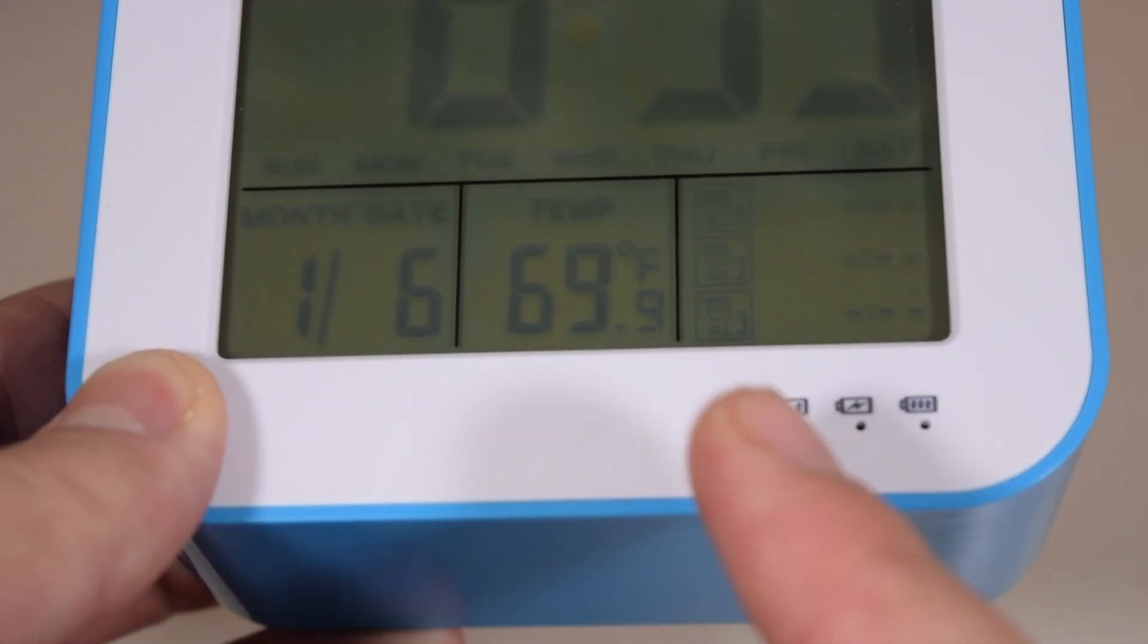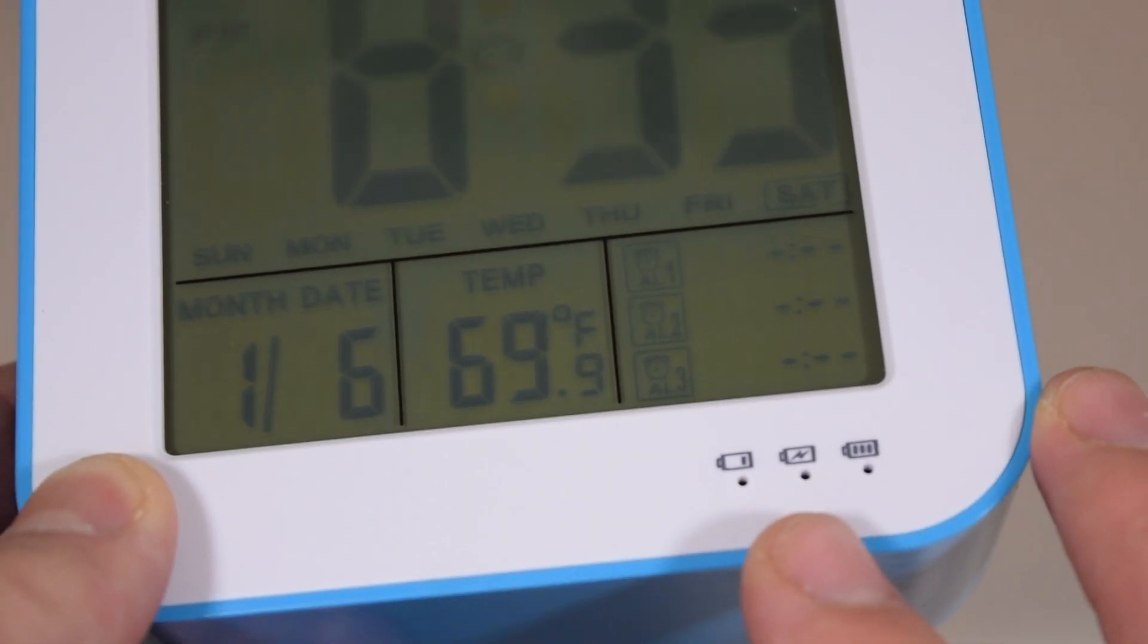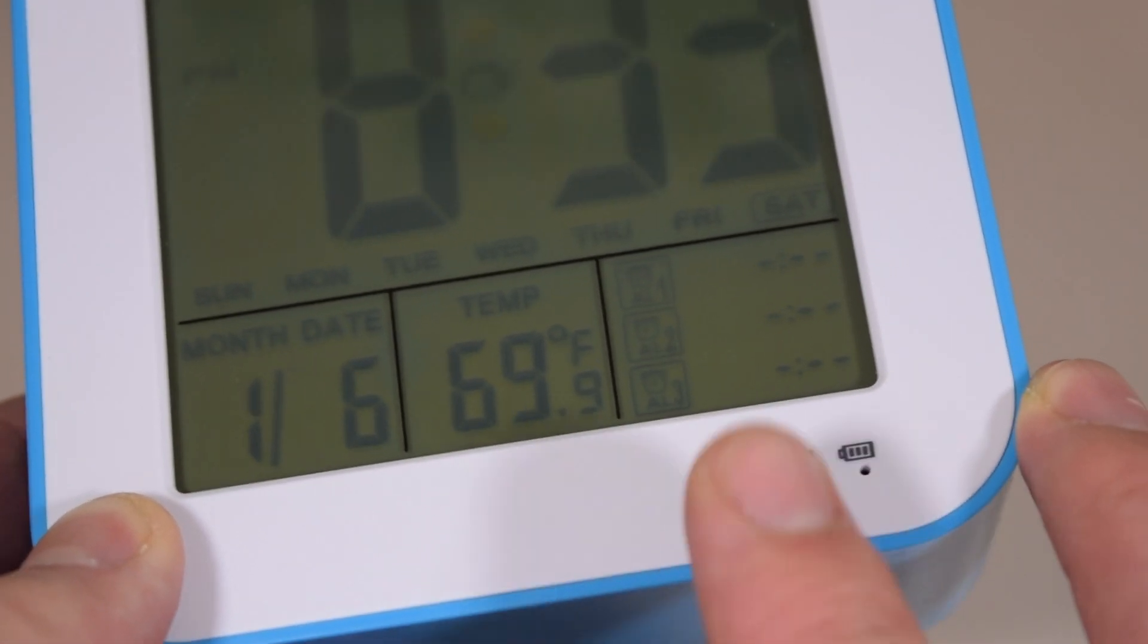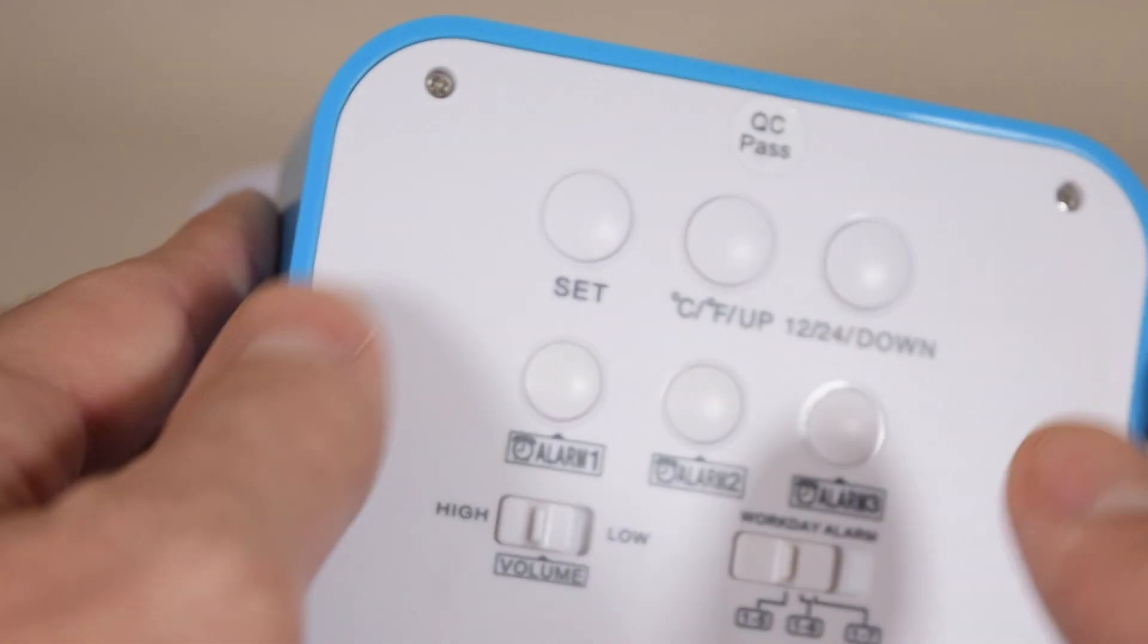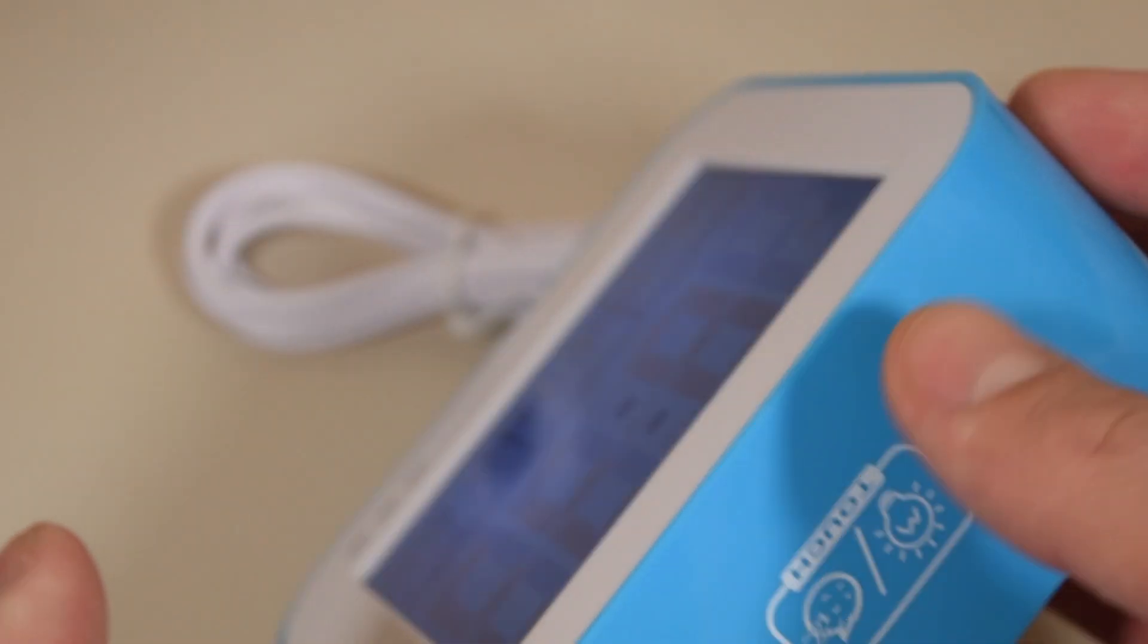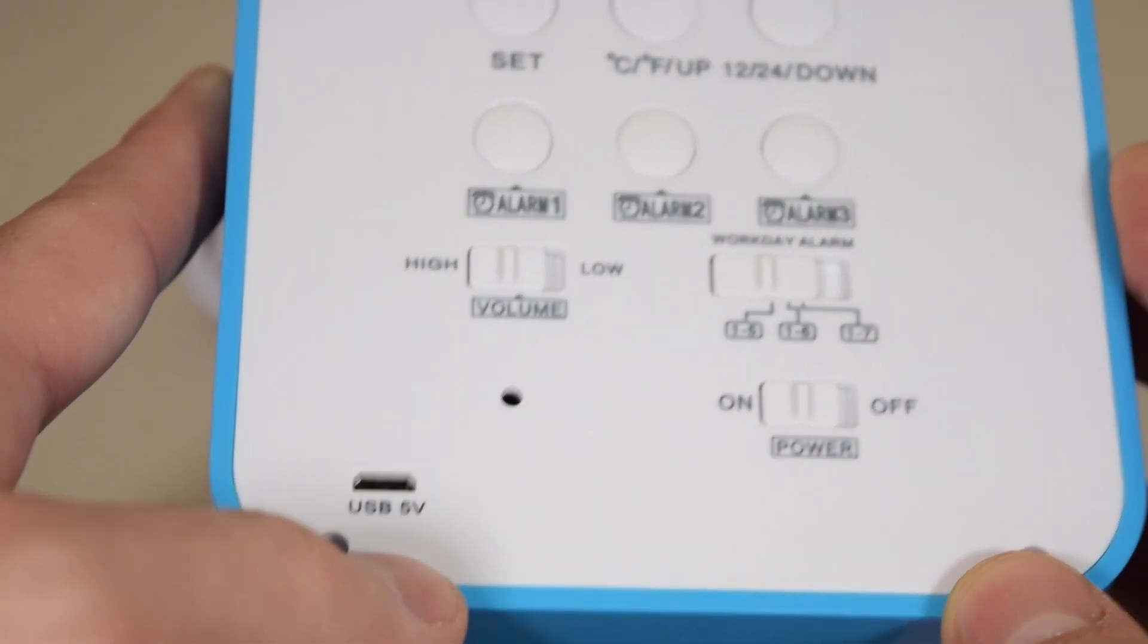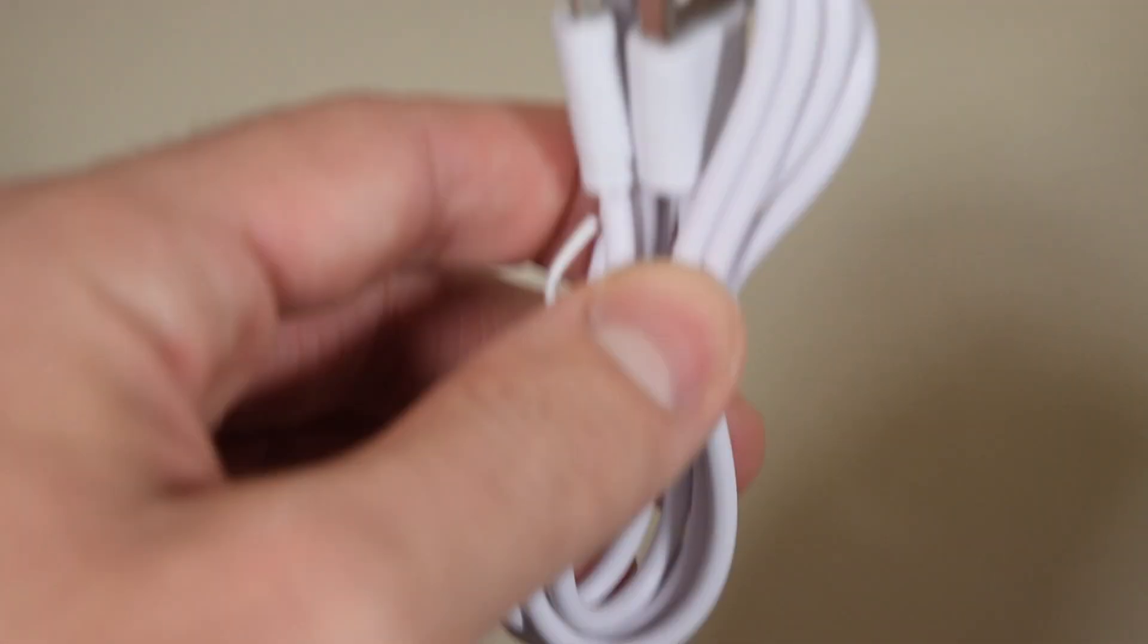So if it's full, it'll do this. And if it's charging, it'll do that. When low, it'll do that. And then there isn't much more to it. This is a touch-sensitive button where you can activate the backlight or you can snooze it. And on the back here is a micro USB charging cable which comes included in the box.